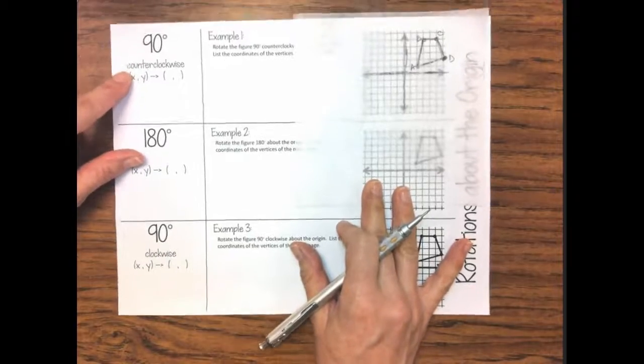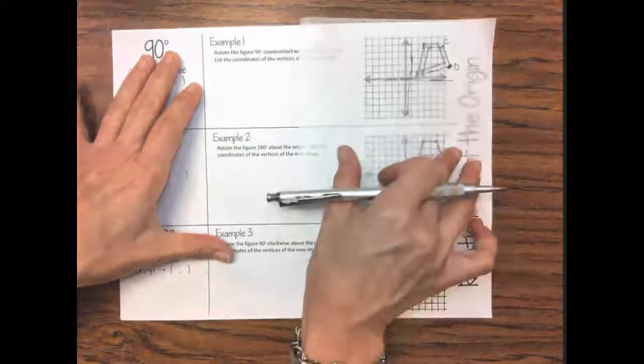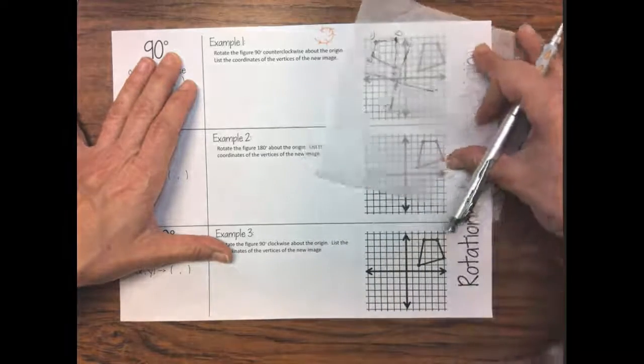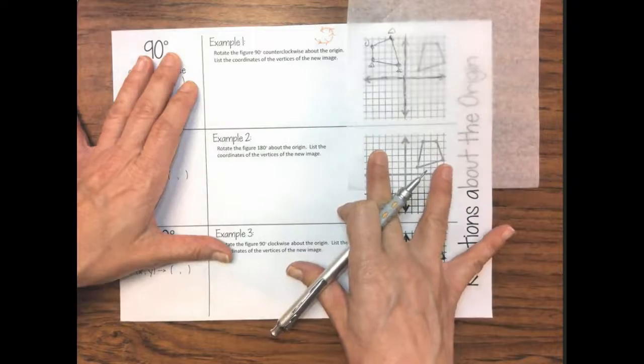So if we're going to go 90 degrees counterclockwise, each 90 degrees is one turn. So we're going to turn until our x and y axis line up again. And there we have it.